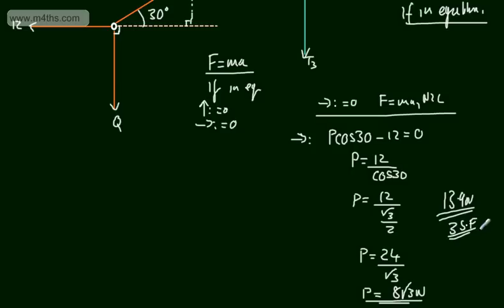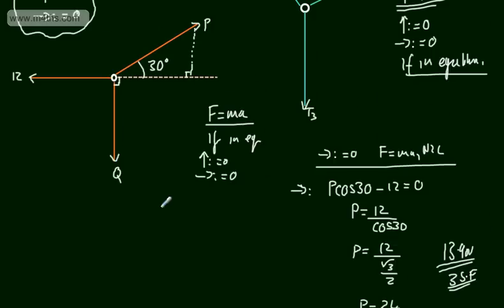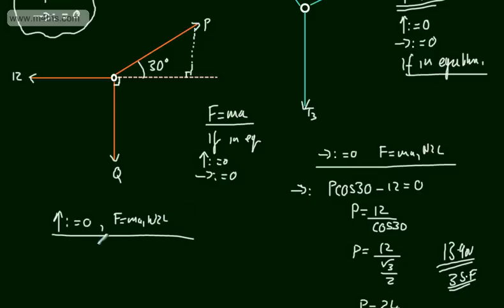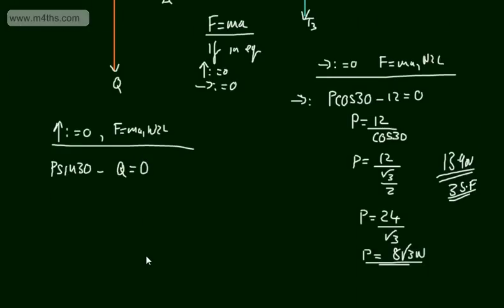So that is the value of P — we resolved horizontally. Now let's resolve vertically to find Q, given that we've found P. Using Newton's second law, considering the vertical component of force P using a right-angle triangle: the hypotenuse is P, so the vertical component is P sin 30. Then P sin 30 minus Q must equal zero.